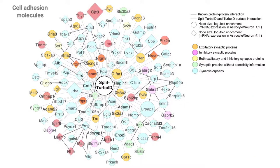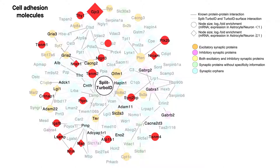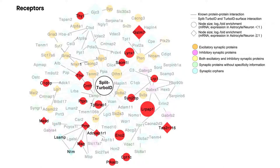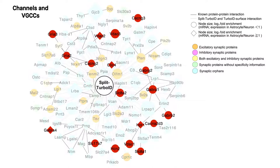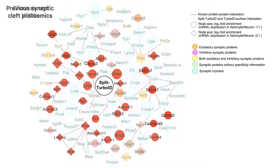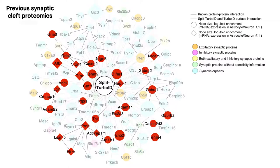And with the versatile split-turbo-ID approach, researchers can begin to explore the roles of many other proteins that participate in not only astrocyte-neuron interactions, but countless other interactions between cells within neuronal circuits.